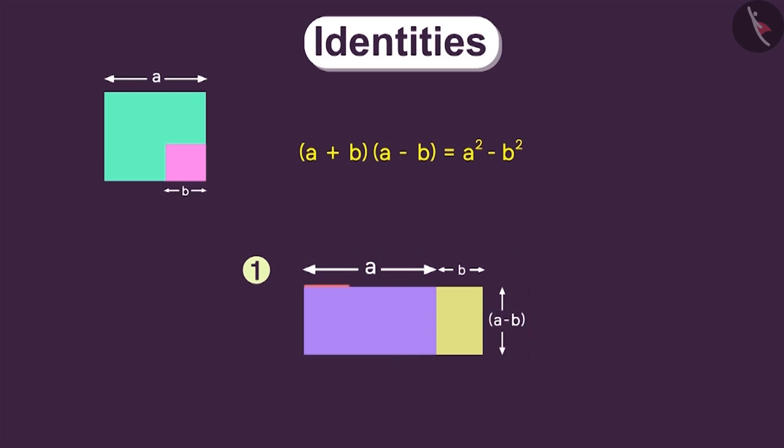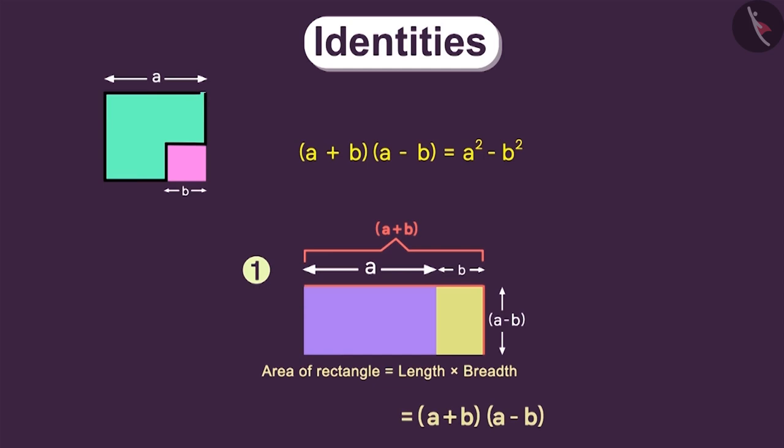The length of this big rectangle is a plus b and its breadth is a minus b. We know that the area of a rectangle is equal to its length times its breadth. Therefore, the area of this rectangle will be a plus b multiplied by a minus b. So, we get the area of this remaining portion to be this.